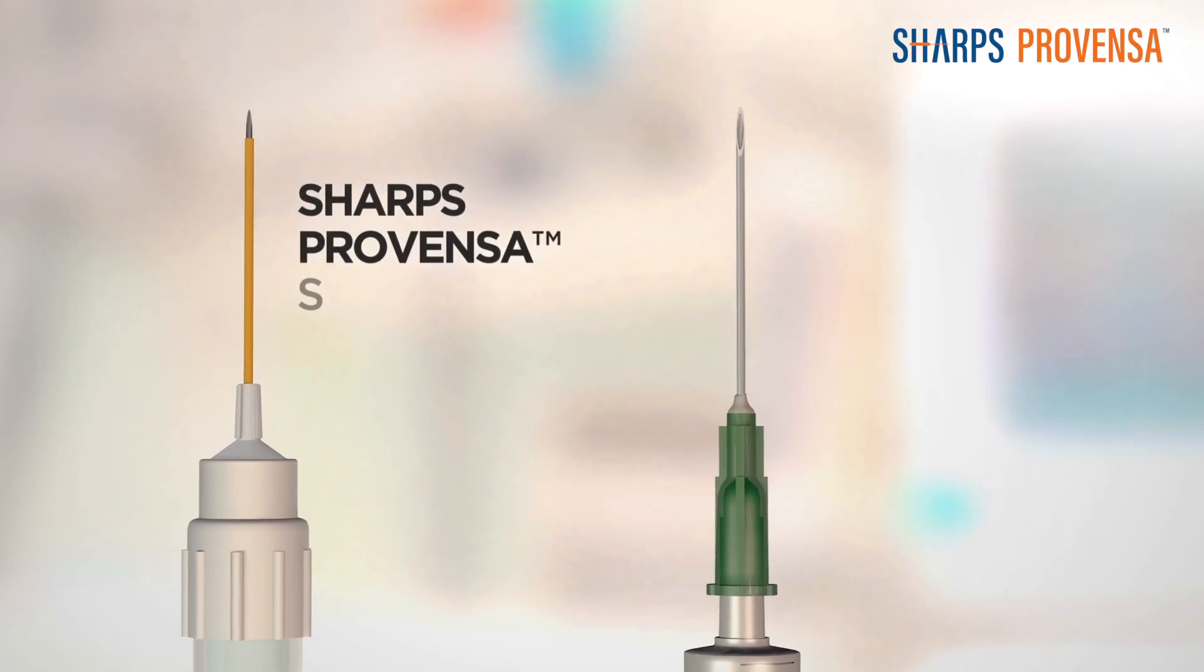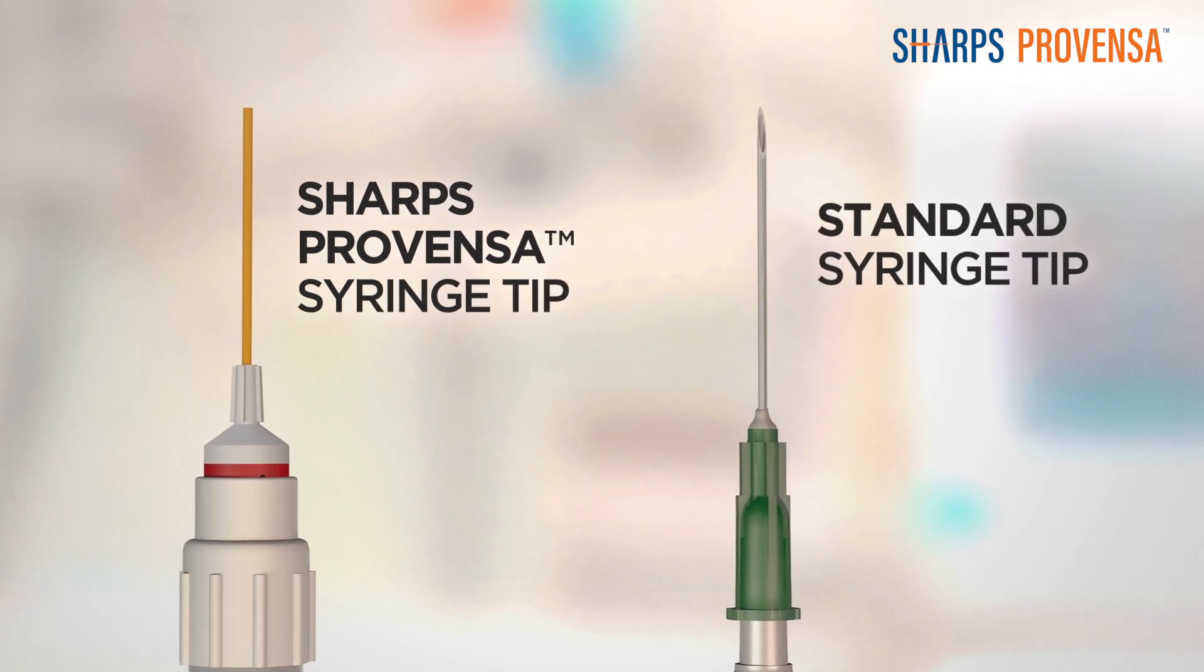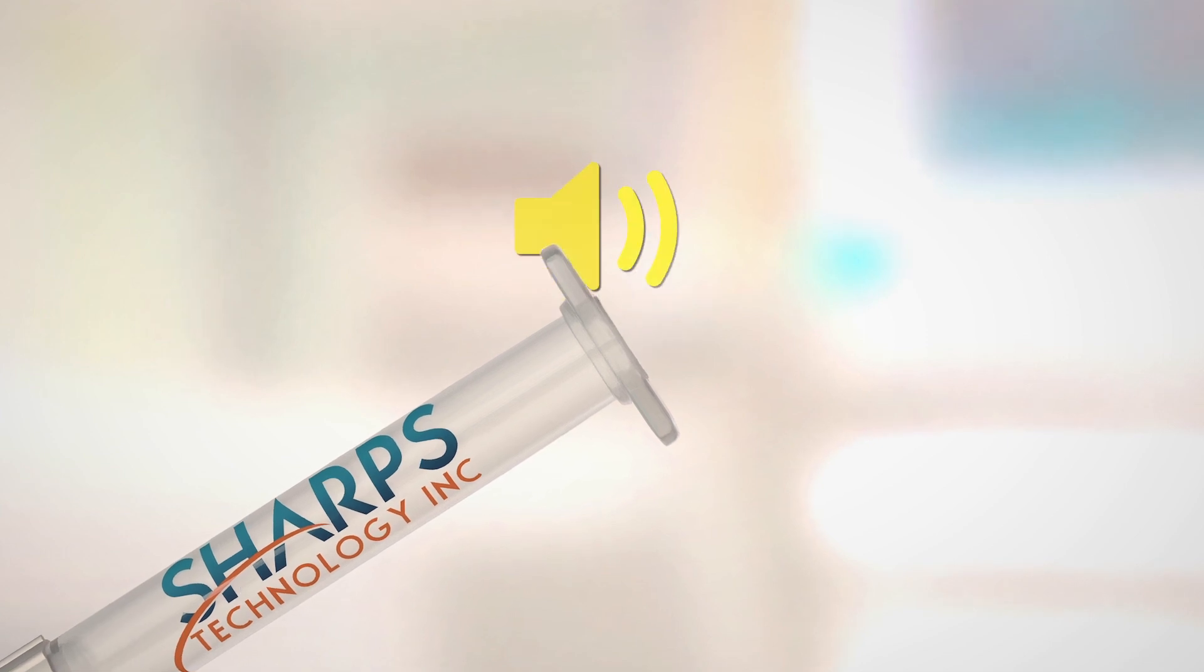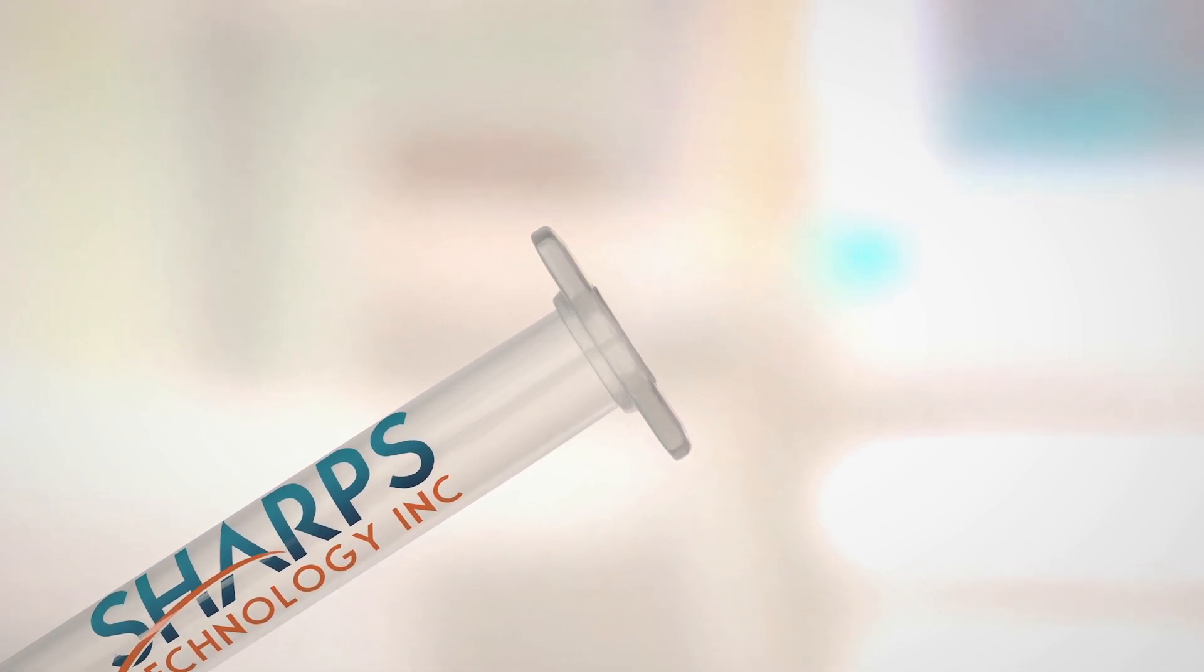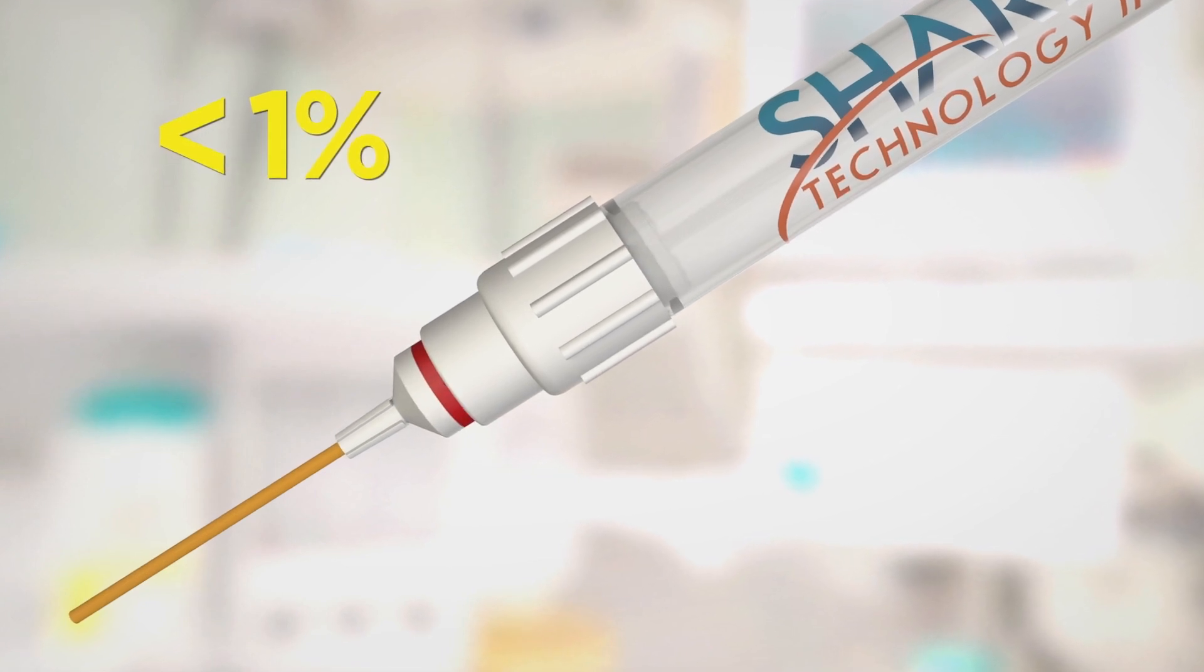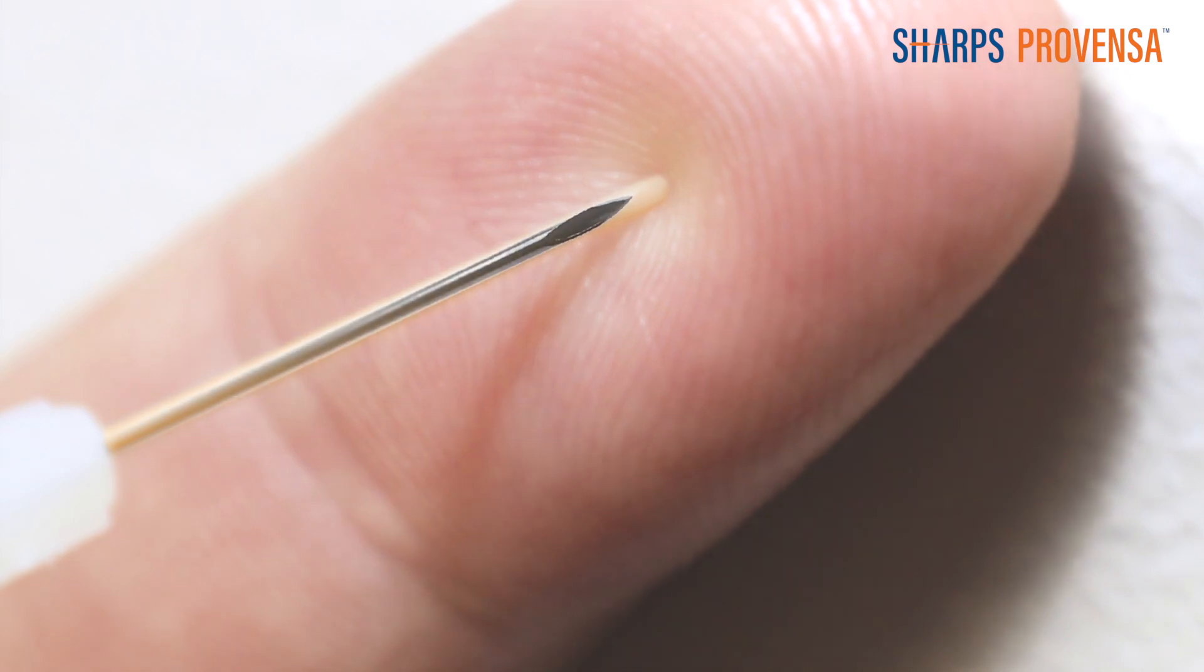Just give the injection and the Sharps Provenza safety shield is activated, covering the sharp needle tip even before the needle is withdrawn. And when the plunger is fully advanced, a locking mechanism automatically prevents the syringe from being reused, and a red line is revealed visually, which lets the administrator know its safety features are fully engaged.